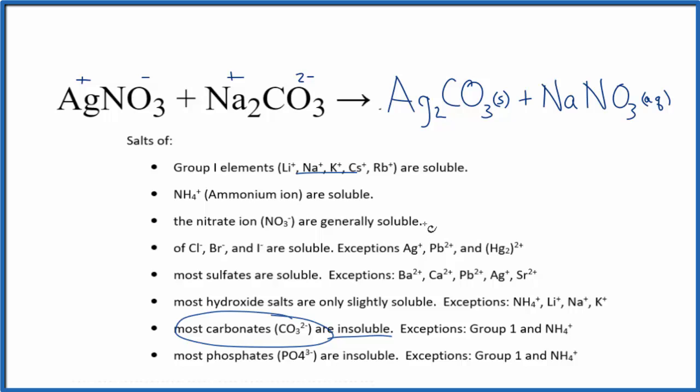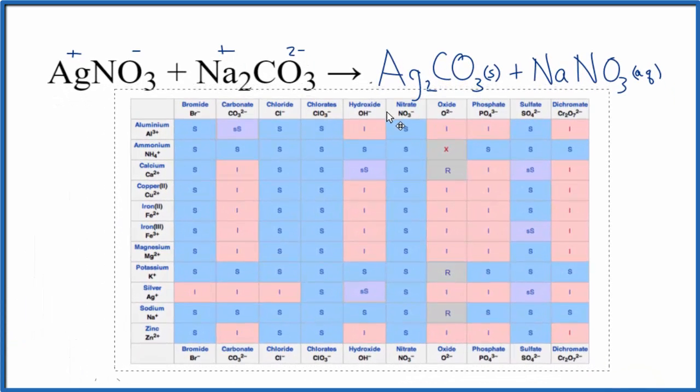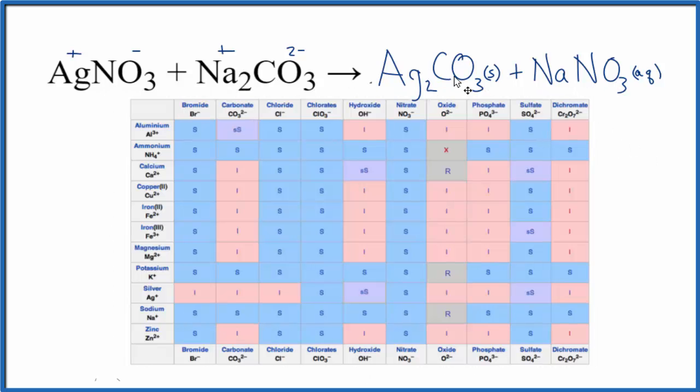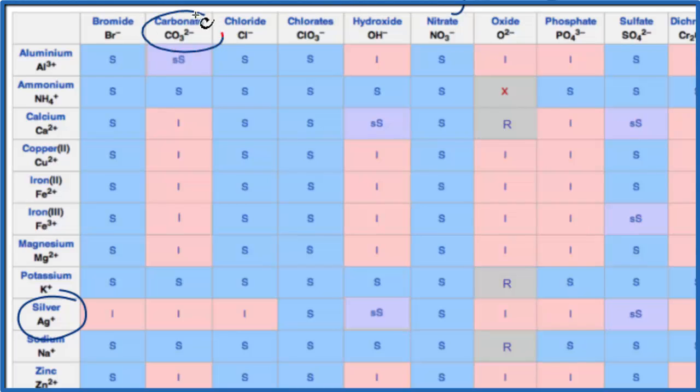There's one more way we can look at this, though. You could also use a solubility table here, a solubility chart here, to look up Ag2CO3, the silver carbonate. So here's silver, here's carbonate.